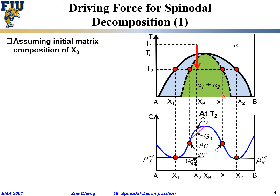This dashed curve is called the spinodal curve. Within this green shaded region, if a system composition drops from high temperature such as T1 into this region, the system would experience spinodal decomposition. Outside this green shaded region but still within the two-phase region, the system would experience nucleation and growth types of precipitation.